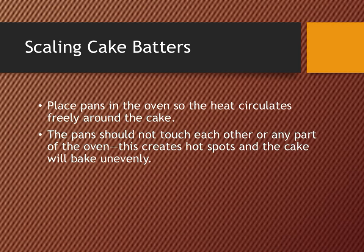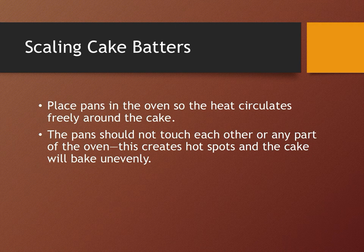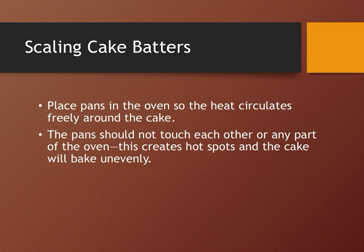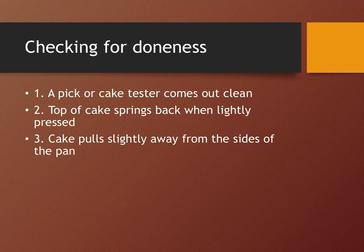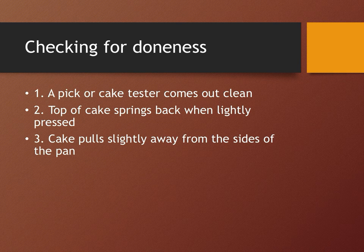A few points to remember while baking: place pans in the oven with even gaps so that heat circulates freely around the cake and cooks it evenly. The pans should not touch each other or any part of the oven, as this creates hot spots and the cake will bake unevenly. Doneness can be tested by inserting a wooden toothpick or cake tester into the center — it should come out clean. The sponge will be springy, the center of the top will spring back lightly, and the cake will pull slightly away from the sides of the pan.